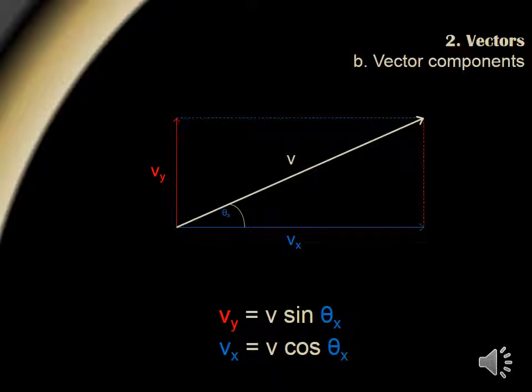When we talk about a vector component, we're talking about the representation or the influence of that vector in a given direction. For instance, the influence of vector v on the y axis of an xy coordinate system is shown in red and would be calculated using v sine theta. Conversely, the influence of vector v on the x axis would be calculated using v cosine theta and represents the blue vector.